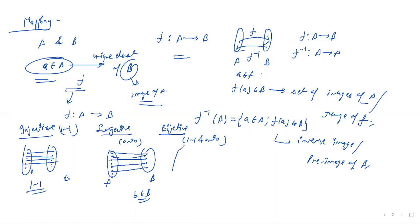Bijective is both one-to-one and onto: each element in A has a different image in B, and every element in B is the image of at least one a ∈ A. These are the types of mapping — injective, surjective, and bijective.